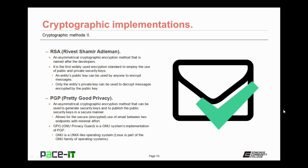PGP, also known as Pretty Good Privacy, is an asymmetrical cryptographic encryption method that can be used to generate security keys and publish public security keys in a secure manner. It allows for the secure — that is, encrypted — use of email between two endpoints with minimal effort. GPG, also known as GNU Privacy Guard, is a GNU Systems implementation of PGP. GNU is a Unix-like operating system, and Linux is part of the GNU family of operating systems.